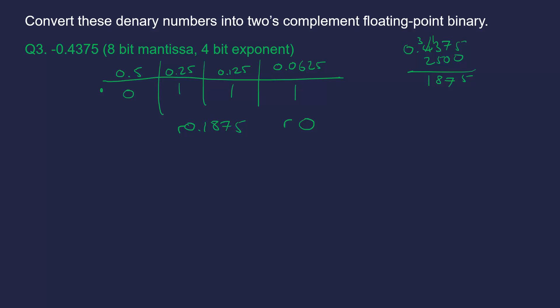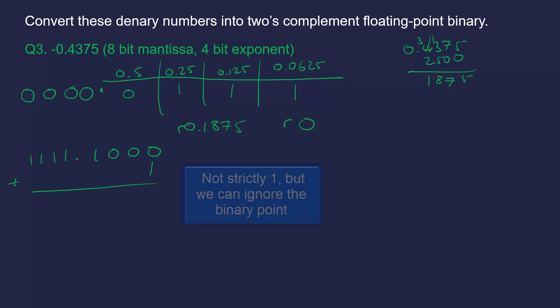We've got four bits and we're asking for eight bits, so I need to pad out with four extra bits. That gives us the positive version of 0.4375, so I need to convert it to two's complement by flipping the bits. We've got four ones - flipping gives us 1 0 0 0, and then adding one gives us 1 0 0 1. Now my step is to move my binary point into our standard position, which is a little harder here - that's why this is trickier.